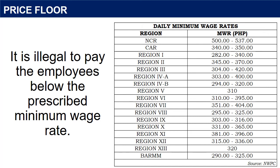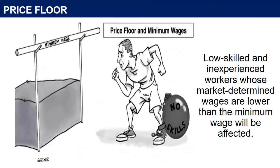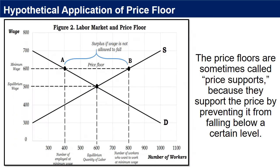According to the National Wages and Productivity Commission, the highest daily wage rate is in the National Capital Region, with a minimum wage ranging from 500 to 537 pesos. It is illegal to pay employees below the prescribed minimum wage rate. Most high-skilled and experienced workers earn wages higher than minimum, so their employment opportunities are not much affected by the minimum wage policy. Unlike high-skilled workers, low-skilled and inexperienced workers whose market-determined wages are lower than the minimum wage will be affected. Price floors are sometimes called price supports because they support the price by preventing it from falling below a certain level.